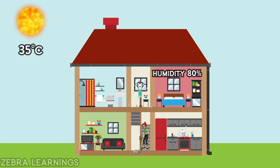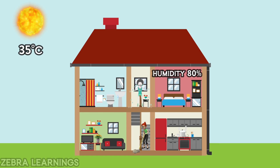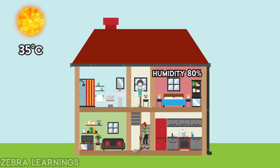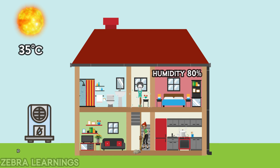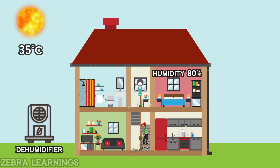However, if the humidity level in the house is very high, the AC unit may not be able to control the humidity effectively. In this situation, we will feel a sticky and sweaty feeling when we are in the house. Using a dehumidifier to control the humidity level in the house can help avoid these problems.